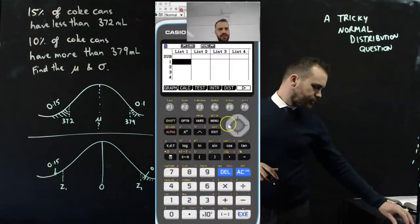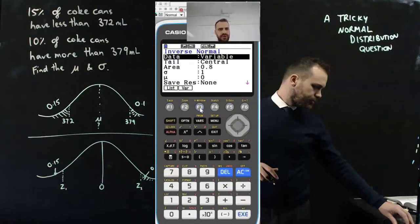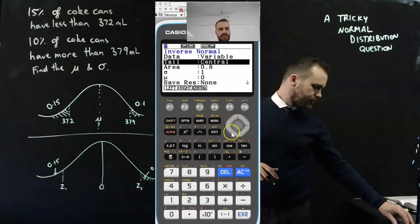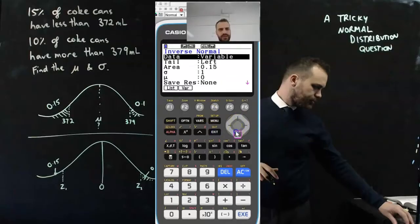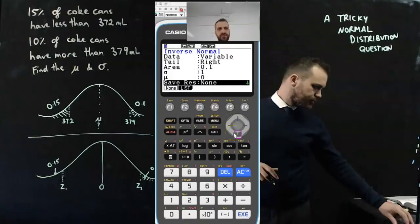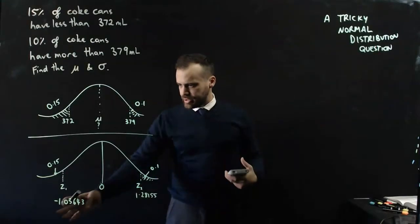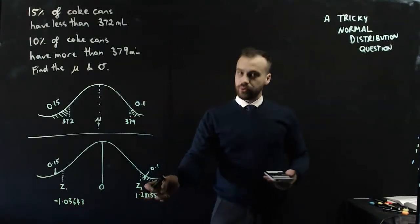I'll just need to go into my stats mode here. I need to go into the distribution, the normal distribution and inverse, and then I need to do two here. So I need to do a left tail. The area is 0.15 on the left-hand side and it is a standard normal distribution. I'll calculate that and I'll get negative 1.0364334. But then I also need that right tail as well. The area for the right tail is 0.1 and it's a standard normal again. And I get 1.28155.